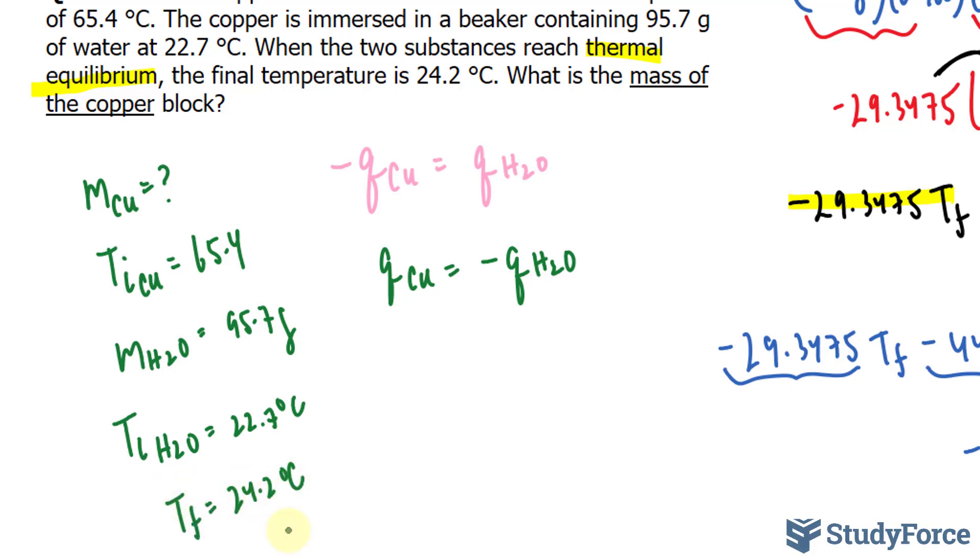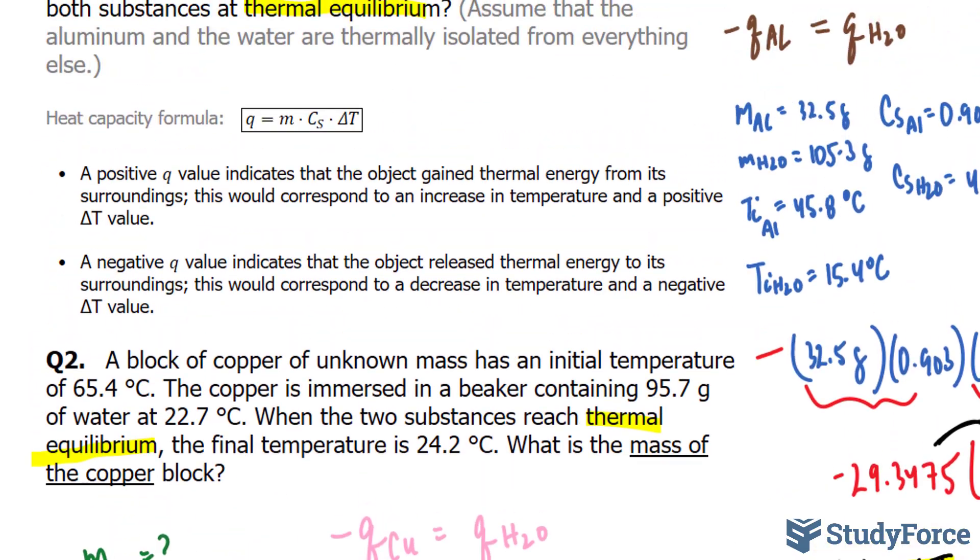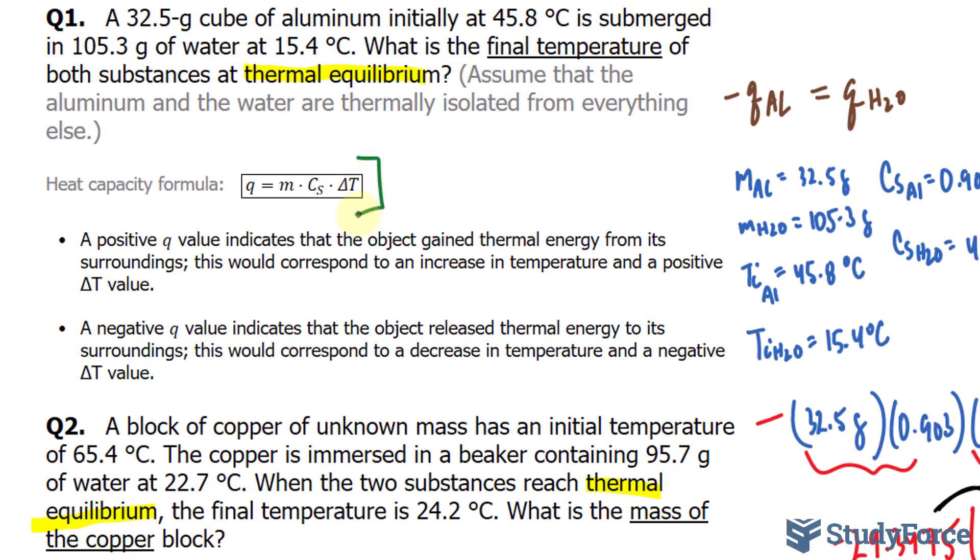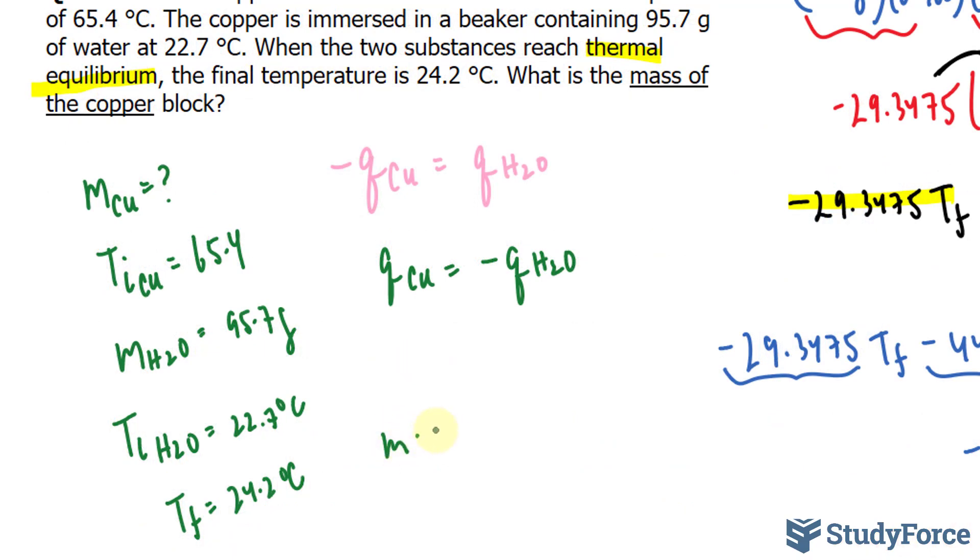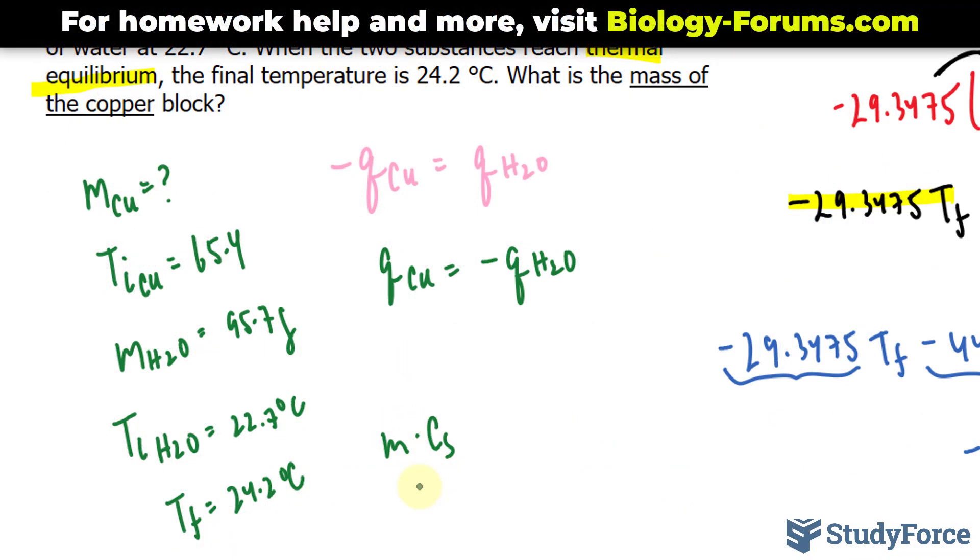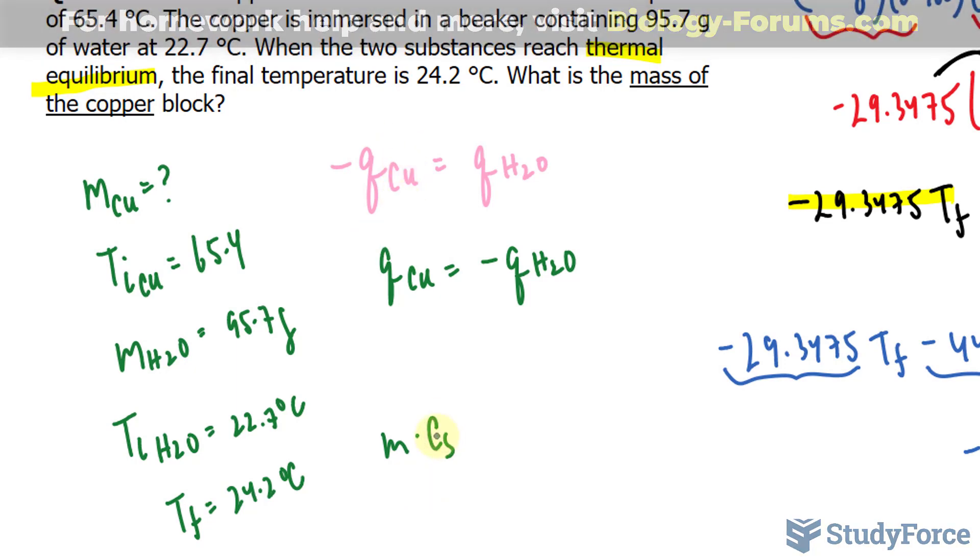Let's go ahead and find the mass of copper. To do this, we'll need to use the same formula we used in question number one. We have Q, which is equal to M times C sub S, the specific heat capacity for the substance. Since Cu is our first one, we'll find that out soon using a table, times the delta T.